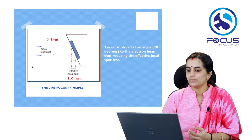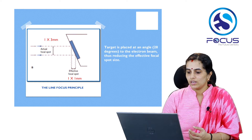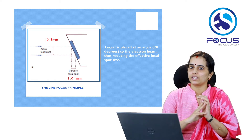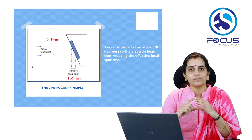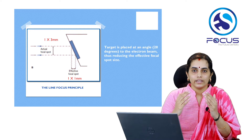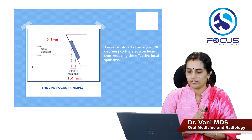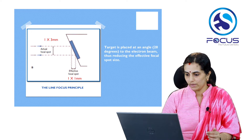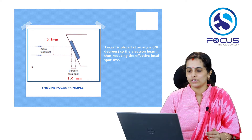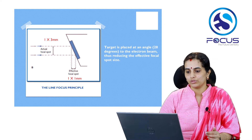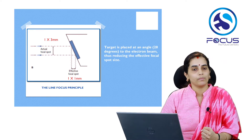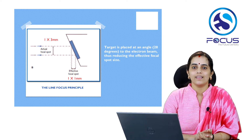Now let us look at the arrangement of the tungsten target. For good image sharpness, we need as small a focal spot size as possible. However, reducing the focal spot to bare minimum risks damage from heat generated. To overcome this, the target is placed at an angle of 20 degrees to the electron beam. This reduces the actual focal spot size of 1 by 3 mm to an effective focal spot size of 1 by 1 mm. This principle is called the line focus principle.